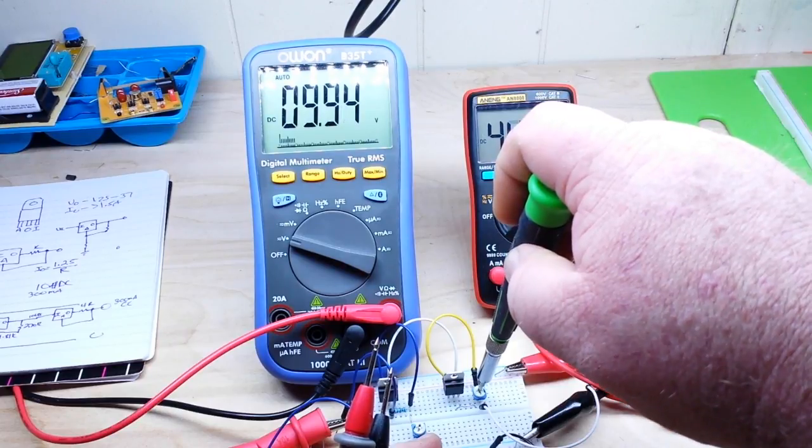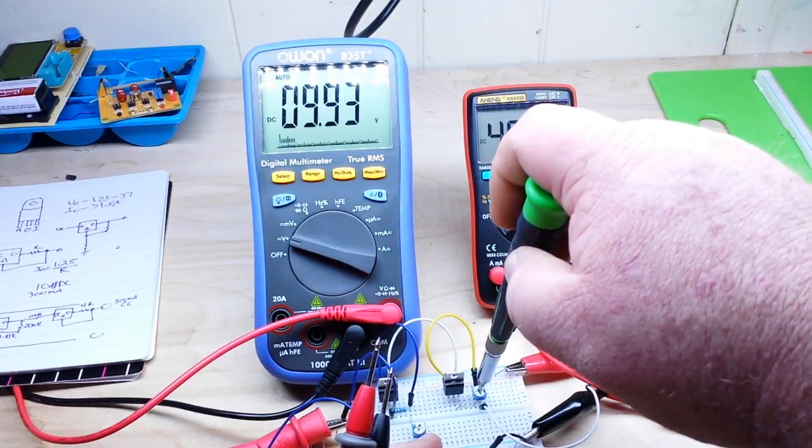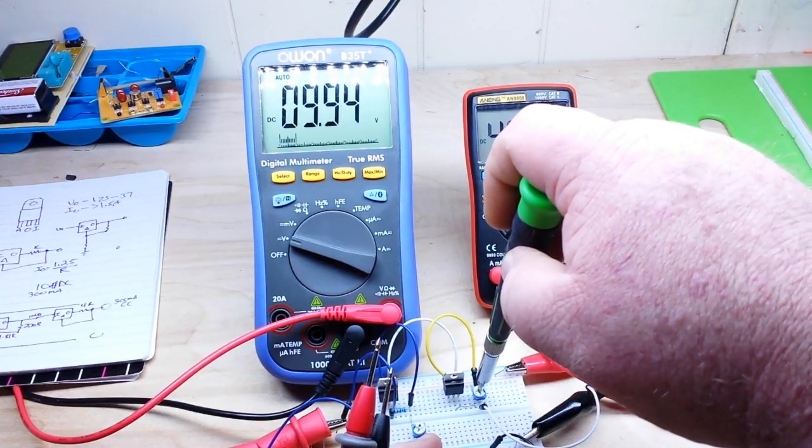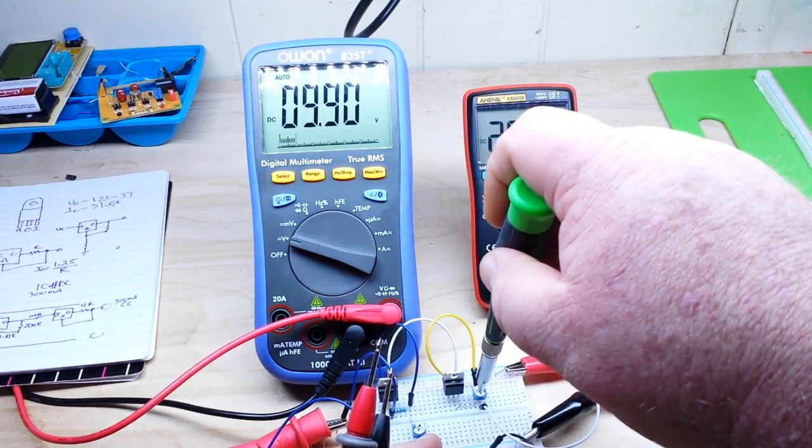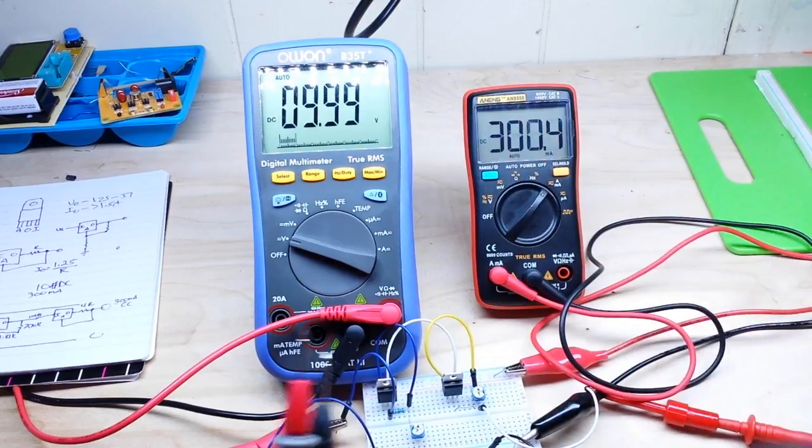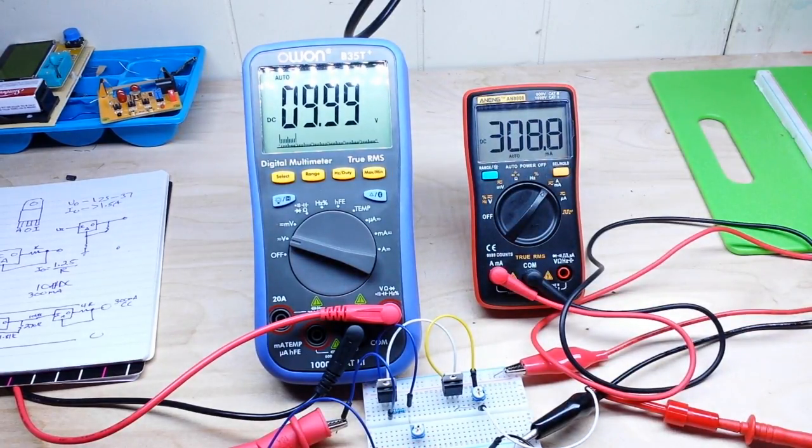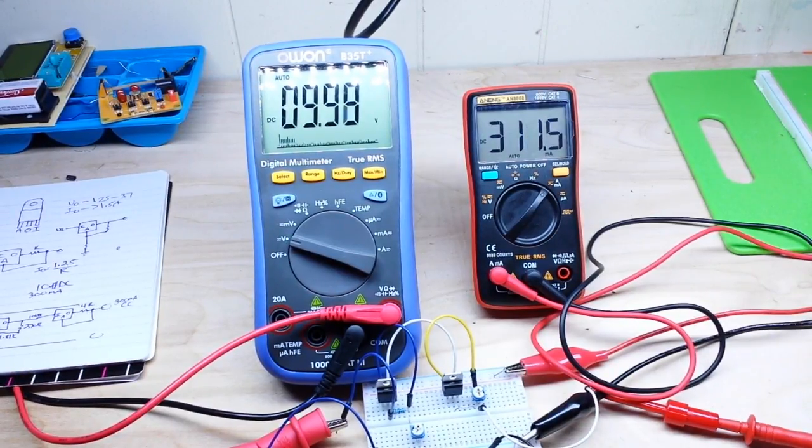Yeah see that thing is just so sensitive, the slightest bump. All right that's close enough. So my math says 4 ohms should give us 312 milliamps, so we'll go with that.